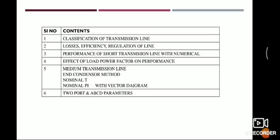In this chapter, the first topic is the classification of transmission lines. After that, there are some losses, efficiency, and regulation. We will also discuss the effect of load power factor on performance. In the next lectures — Lecture 2 or Lecture 3 — we will discuss medium transmission line methods: nominal T, nominal pi, with vector and phasor diagrams. We will also discuss two-port and ABCD parameters.